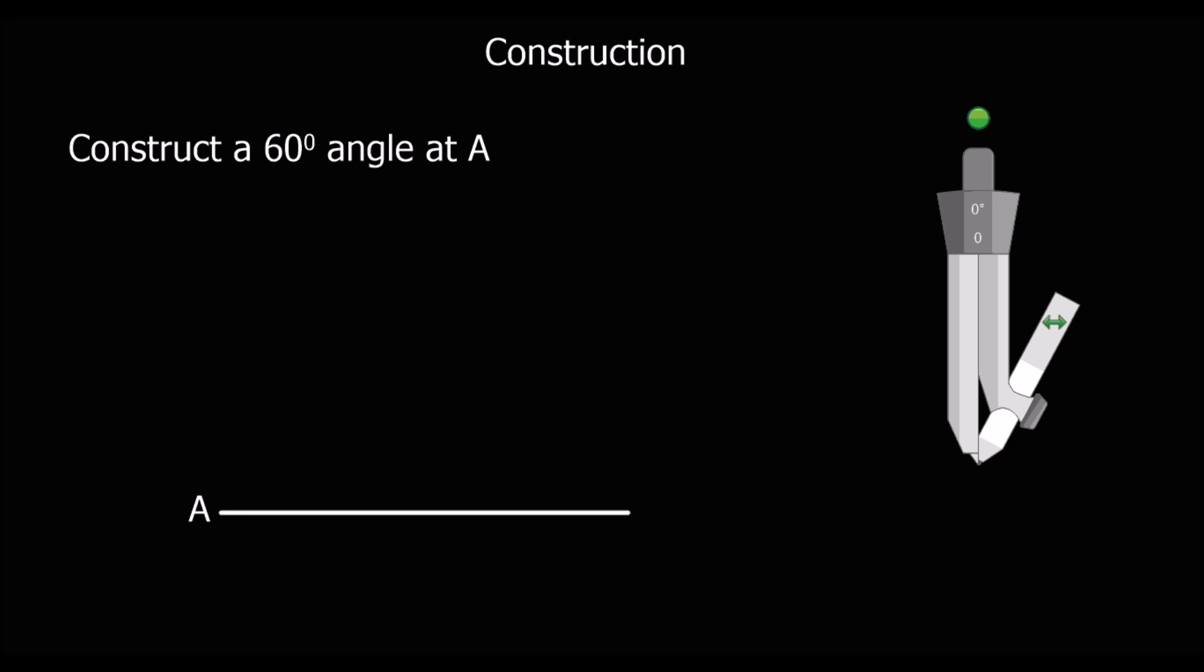We're going to construct a 60-degree angle at A. To do a 60-degree angle, what we do is we actually construct an equilateral triangle.